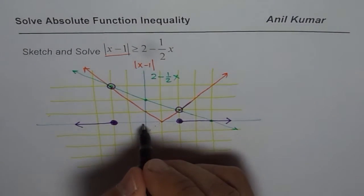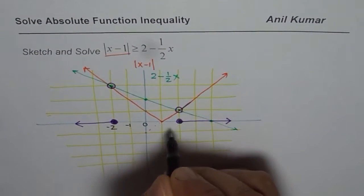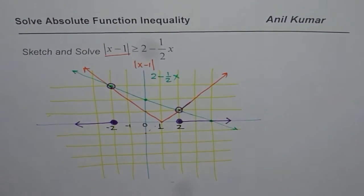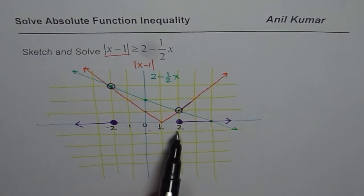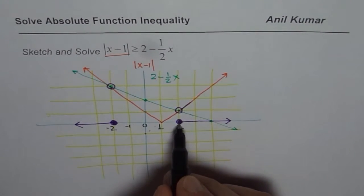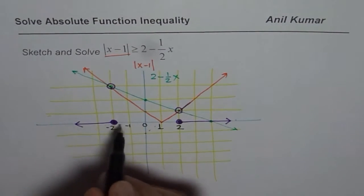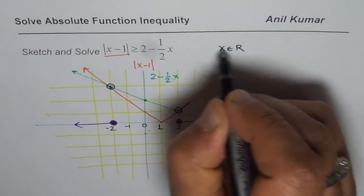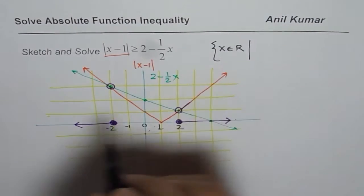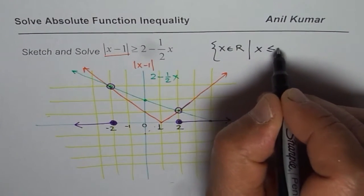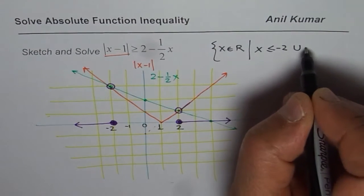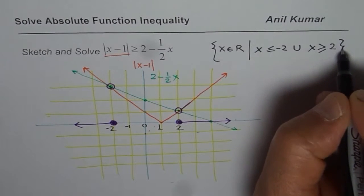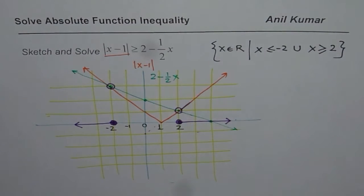Now we can write what this point is. Here we have 0 minus 1 minus 2. On this side we have 1 and we have 2. So the solution is that the x value is beyond 2 to the right and left side. So we can write down our solution that x belongs to real numbers where x is less than equal to minus 2 union x is greater than equal to 2.